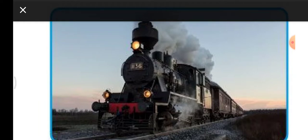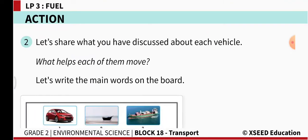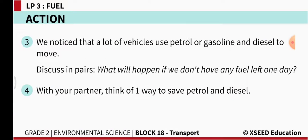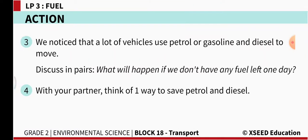The steam locomotive is burnt using wood, coal, or oil, and it moves with the help of steam. We noticed that a lot of vehicles use petrol or gasoline and diesel. What will happen if we don't have any fuel left one day? Petrol and diesel are non-renewable resources — one day they will get exhausted.